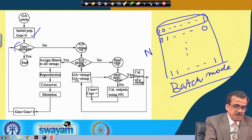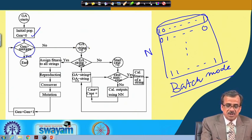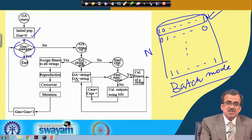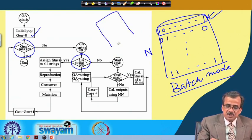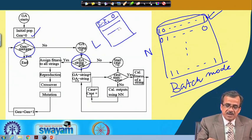Here we have a check: whether the generation is greater than or equal to the maximum number of generations. If yes, that is the end of the algorithm; if no, we concentrate on the first GA string, set GA string equal to 0, and check whether the GA string index is greater than the population size. If no, we start with the first training case. Suppose we have capital L number of training scenarios, and each training scenario carries information of the input and the output.